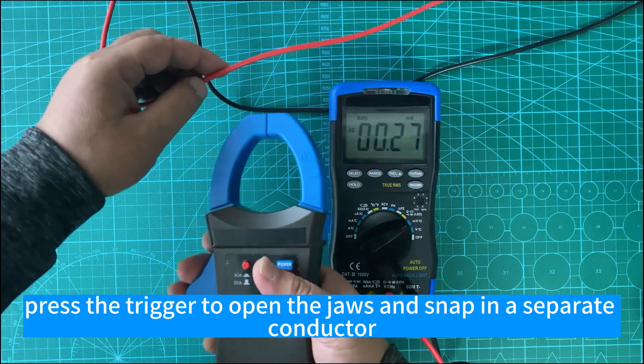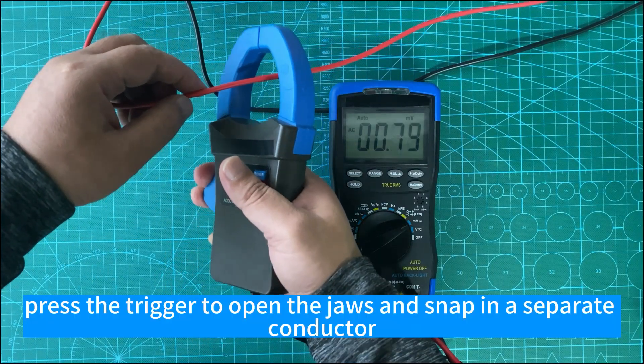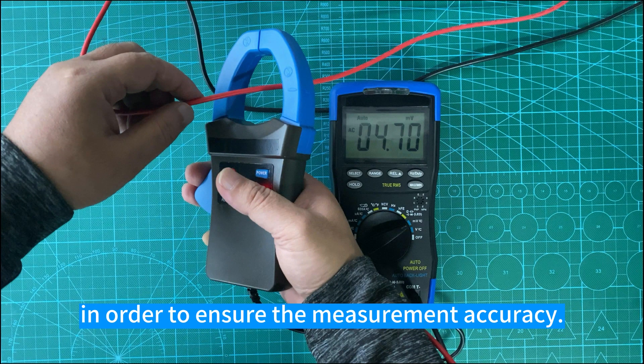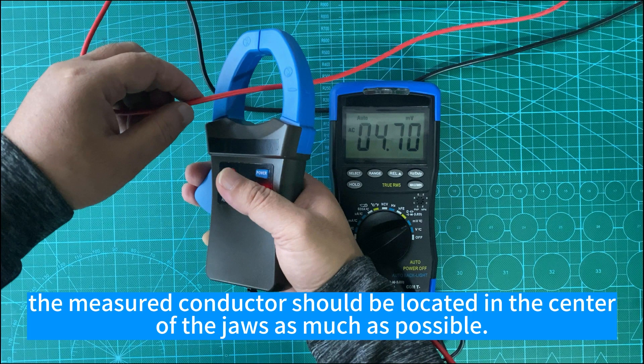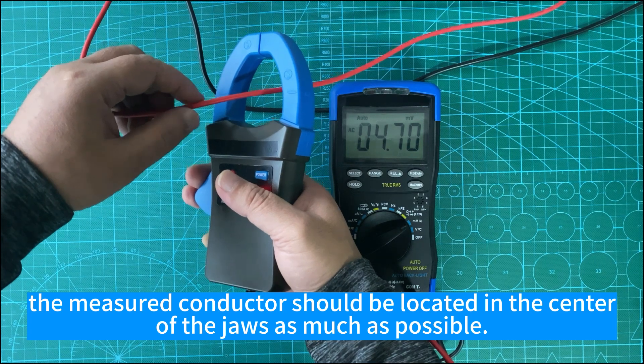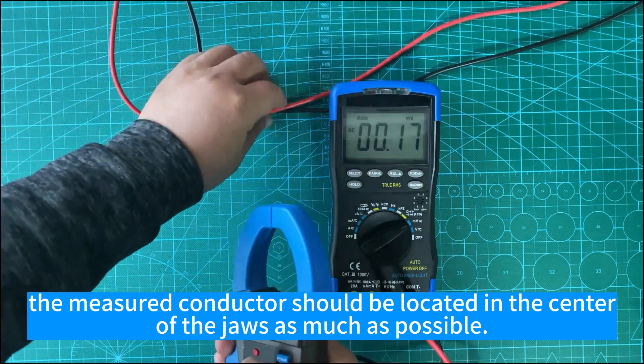Press the trigger to open the jaws and snap in a separate conductor. In order to ensure the measurement accuracy, the measured conductor should be located in the center of the jaws as much as possible.